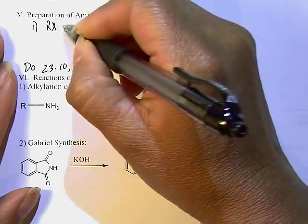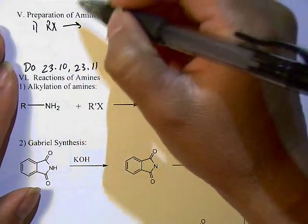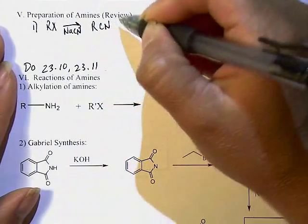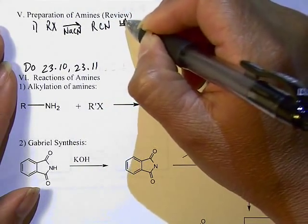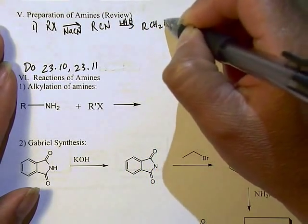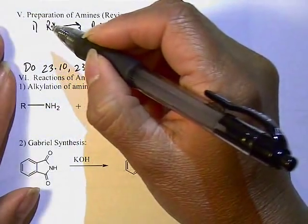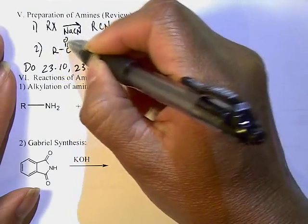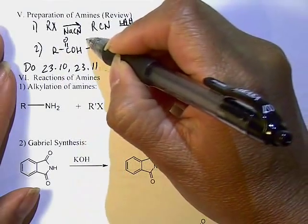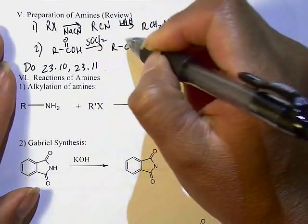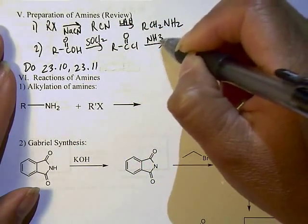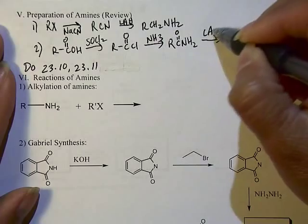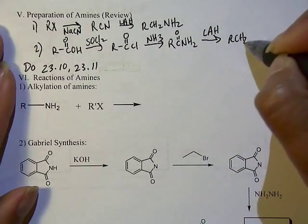If you react an alkyl halide with sodium cyanide, you're going to do an SN2 type of reaction to put the cyanide onto the R group, and then you could reduce it with LiAlH4, and that will give you the primary amine. Secondly, you could take a carboxylic acid, convert it to acid chloride, then put on the amine, and then you do the reduction with a strong reducing agent to get an amine.